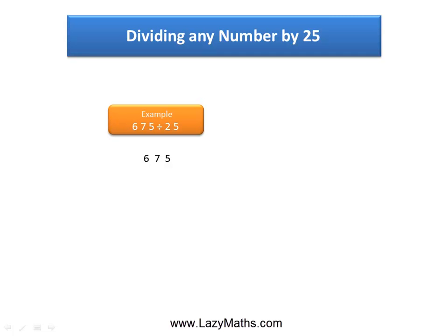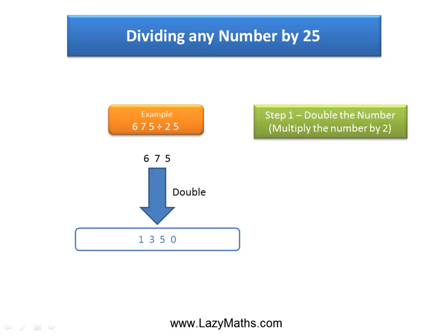The first step is to take the number 675 and double it. Double of 675 is 1350.